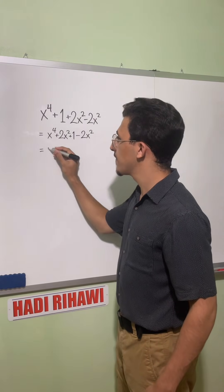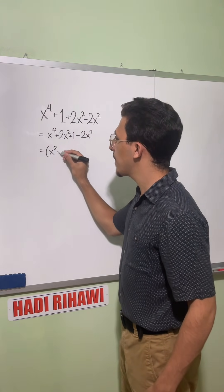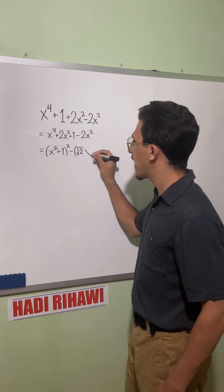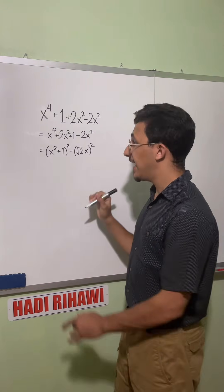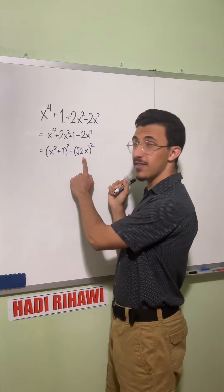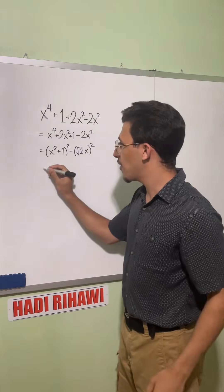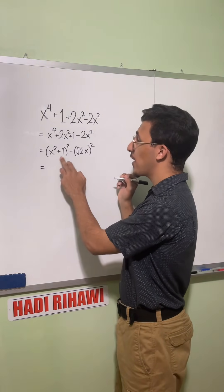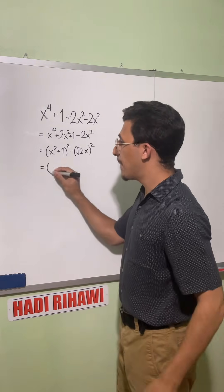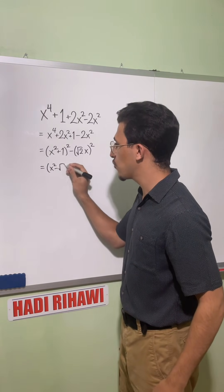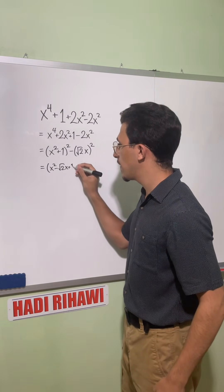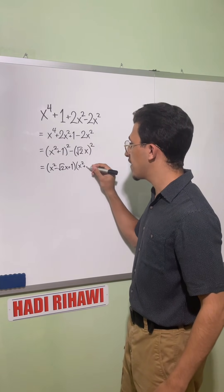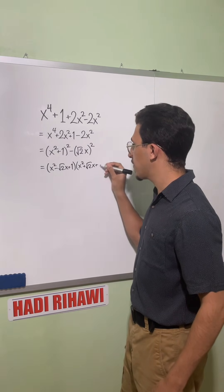This becomes x squared plus one, all squared, minus root two x, all squared. Now we have a difference of squares. The standard formula is a squared minus b squared equals a minus b times a plus b. So this factors into x squared minus root two x plus one, times x squared plus root two x plus one.